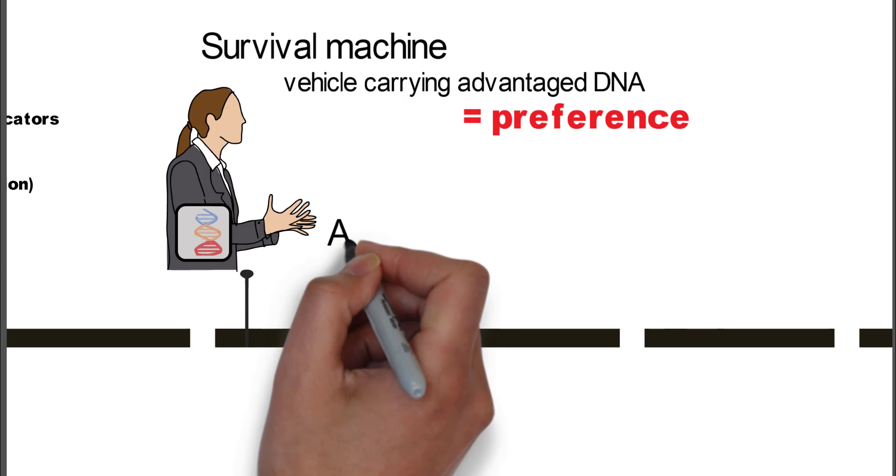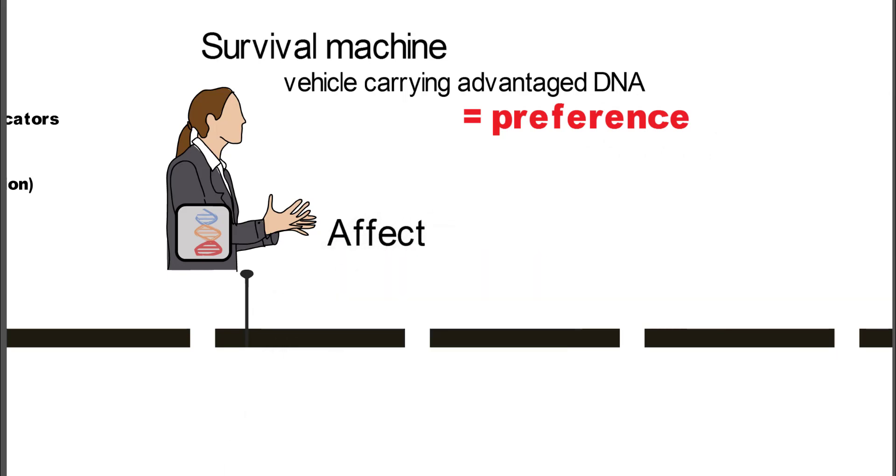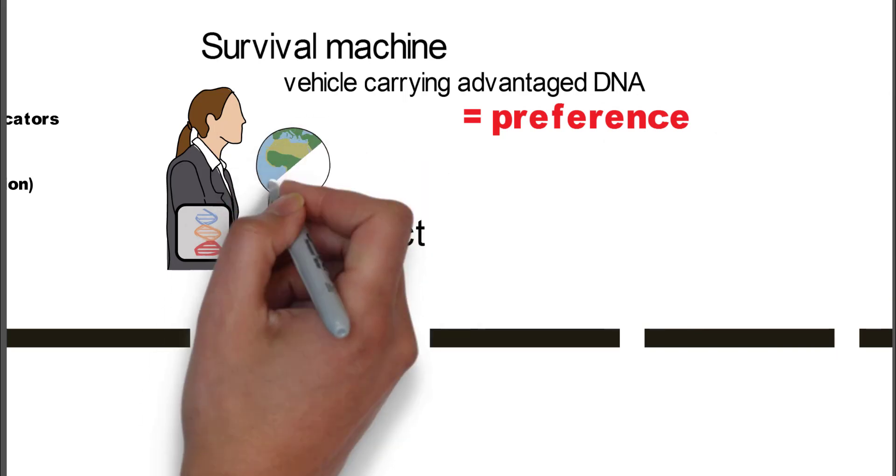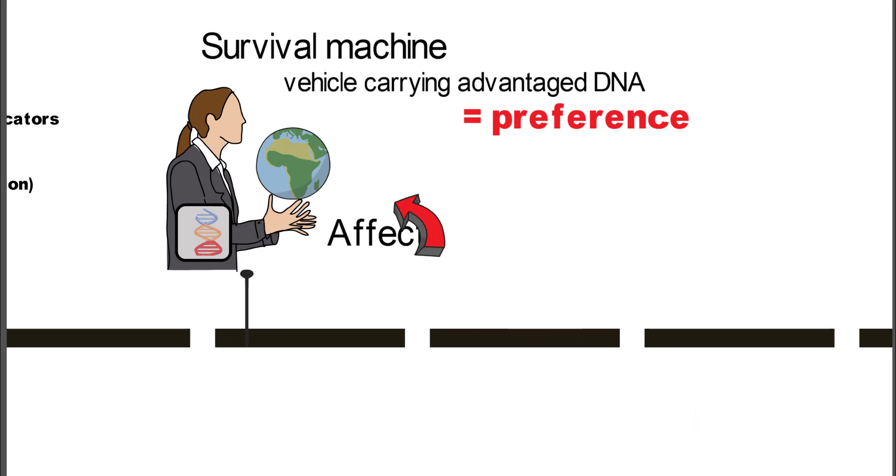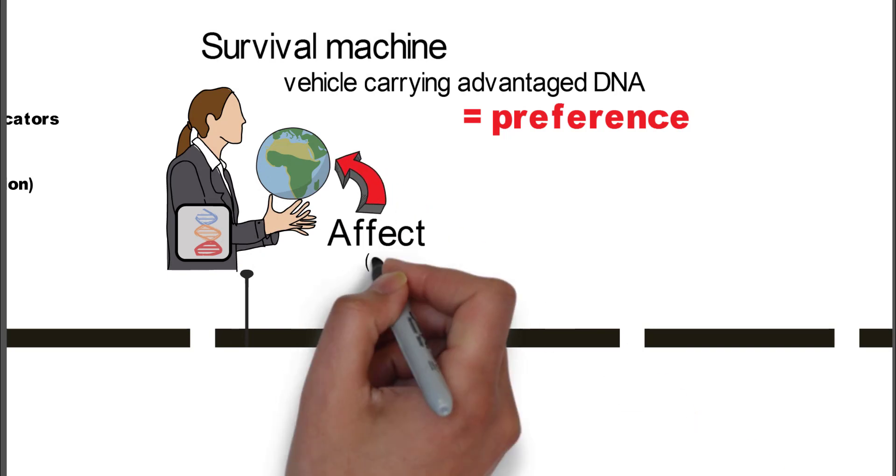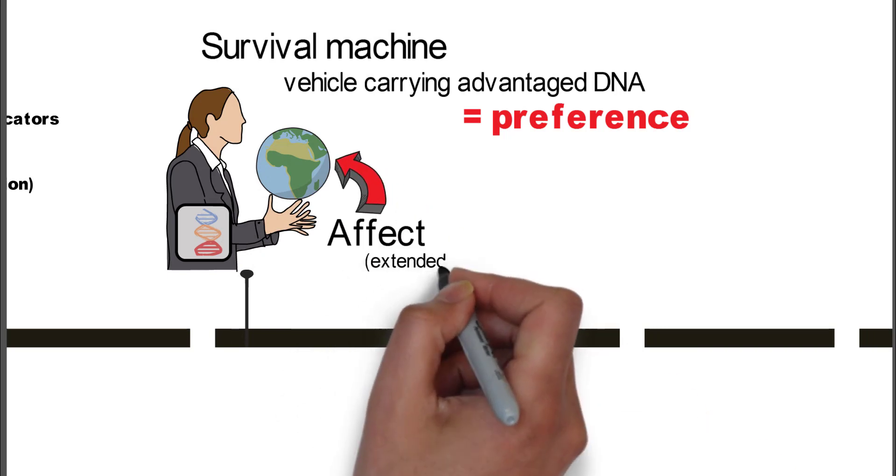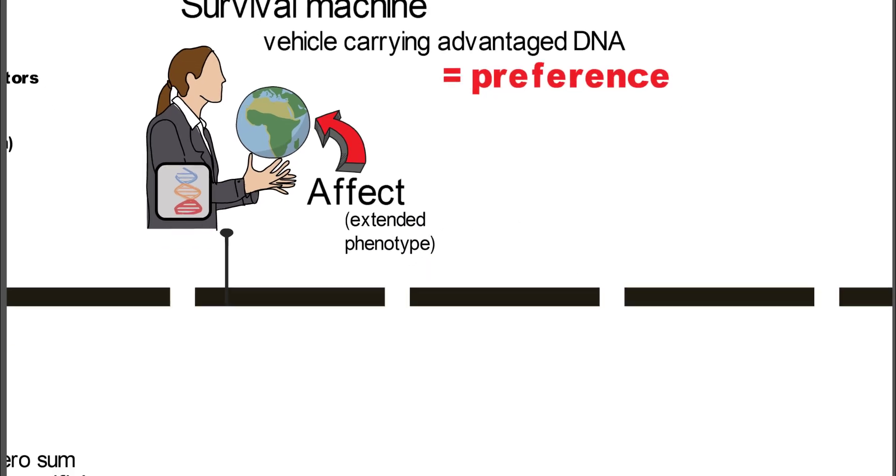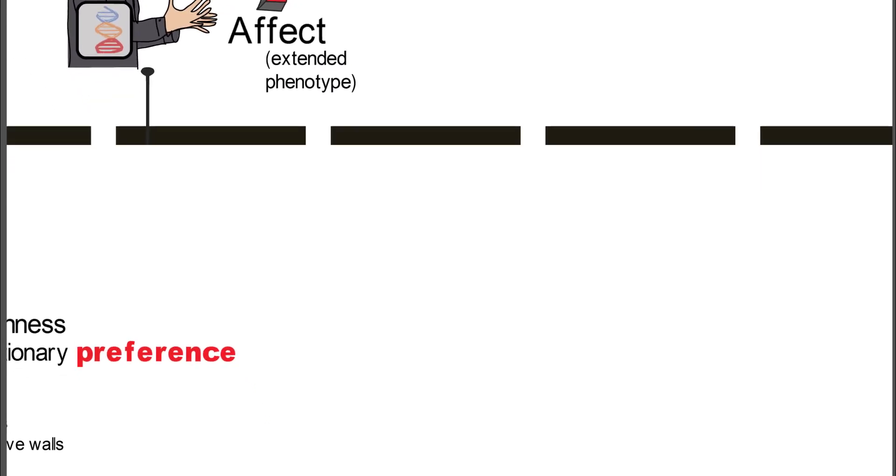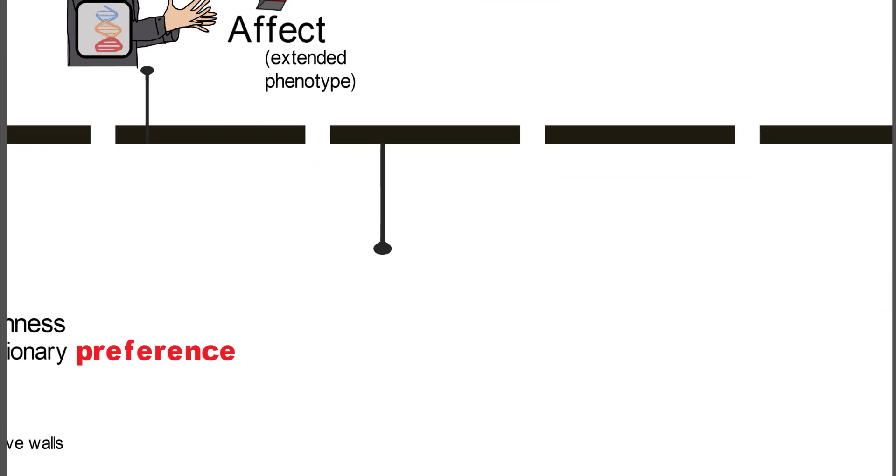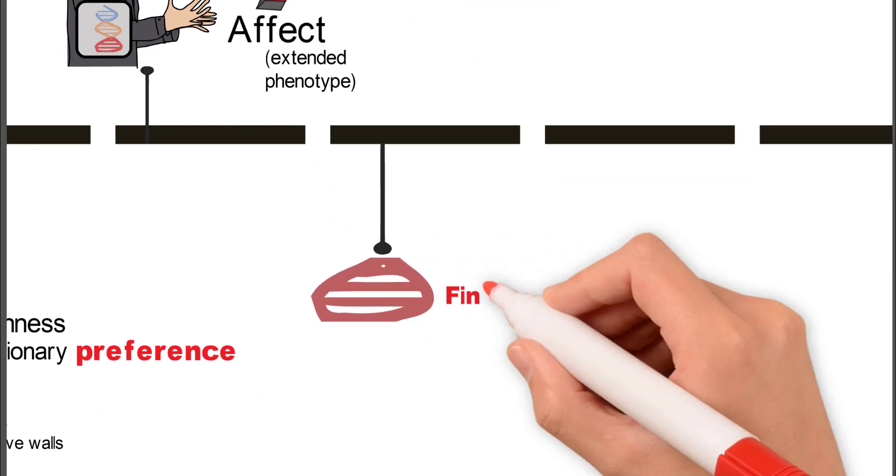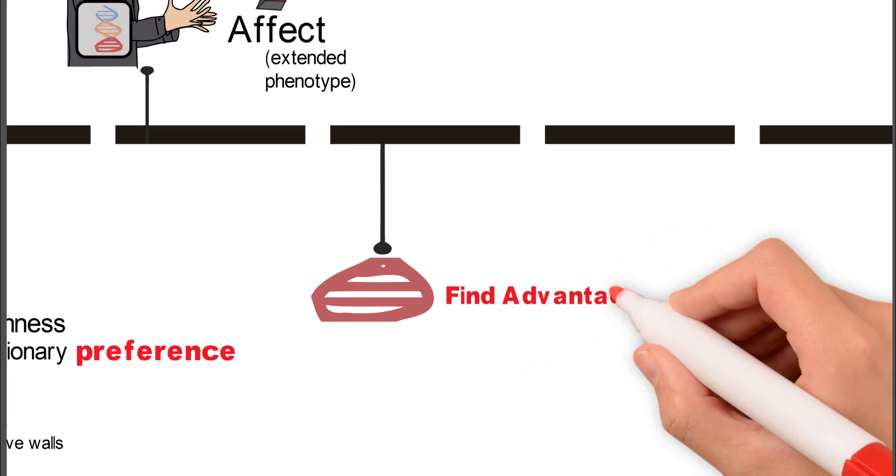But the idea is that it also creates a preference for us. And those preferences that we have affect the way that we look at the world, the way we deal with all the other objects in the world. And that he calls the extended phenotype. So basically, what he then talks about is how do these alleles get to find their advantage?